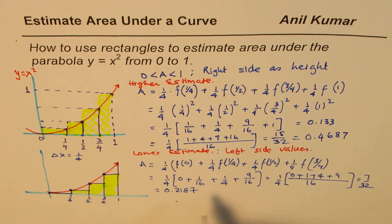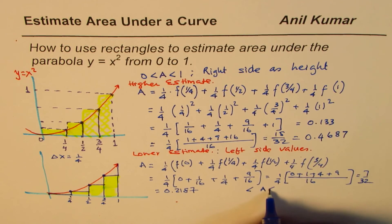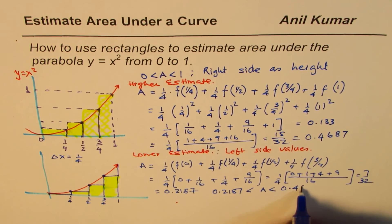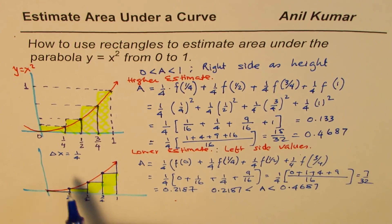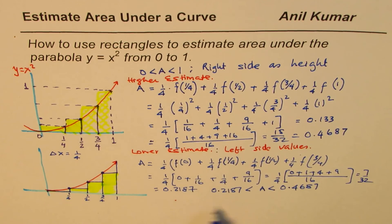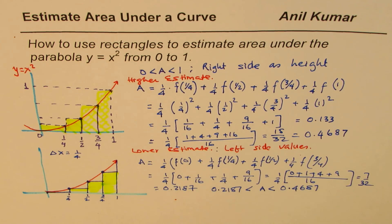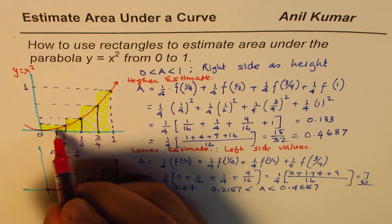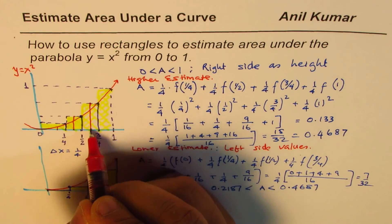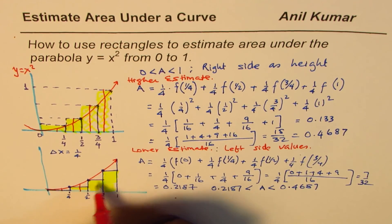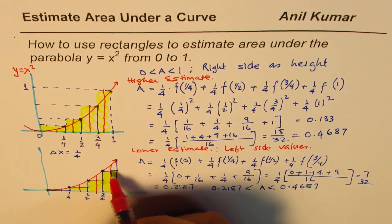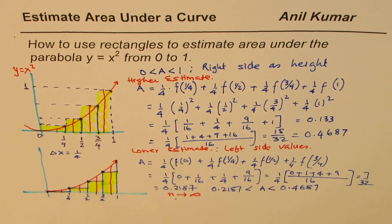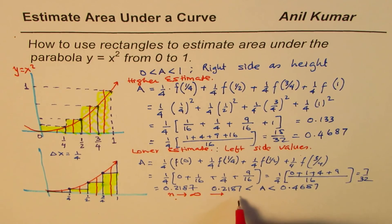So the area is somewhere between these two limits: between 0.2187 and 0.4687. This is because the left-side estimate is the lower bound and the right-side estimate is the upper bound. The idea is that I just made four rectangles, but if I make eight, I'll get closer to the actual area. This is the key concept — by increasing the number of rectangles, we fill the region more closely to the curve.